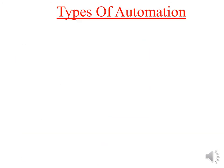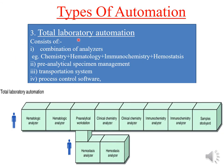The next type is total laboratory automation. In total laboratory automation there is a combination of analyzers used — chemistry, hematology, immunochemistry, and hemostasis analyzers. Apart from these, there is also automated pre-analytical specimen management.